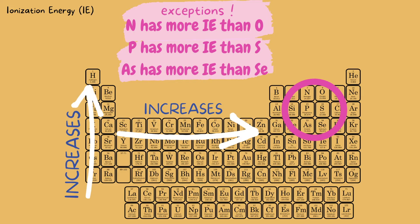By the way, if you're wondering why this is, I'm not going to go over it in this video. But if you know how to do electron configuration, go ahead and do the electron configuration for one of these examples and you'll see why you need to flip them.